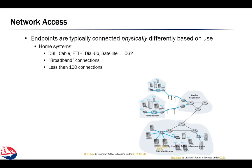We learned last time that a network consists of a group of computers that are connected to share some resource. In this section, we're going to look at different ways to actually connect those computers. Selecting one is typically going to be driven by the needed capacity, the needed reliability, and the overall cost.